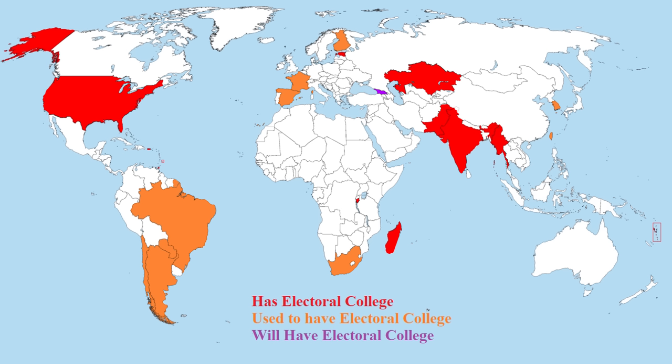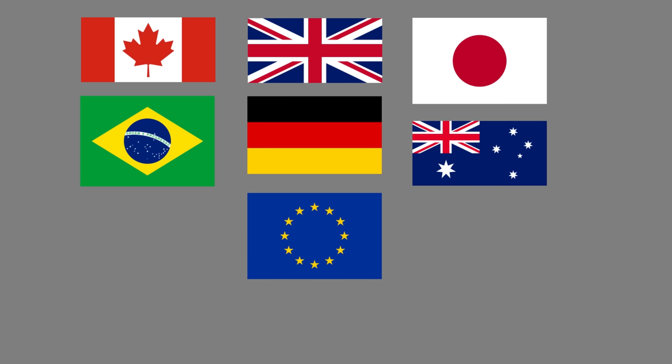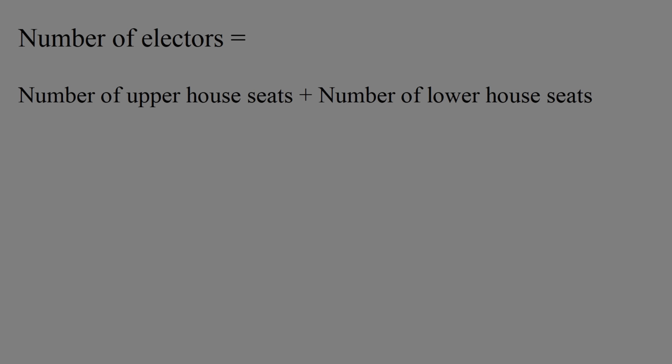Now, some countries in the past have used Electoral College systems, several today still use them, and Georgia is expected to adopt one in 2024. But for this video, we're going to imagine countries that currently do not have an Electoral College and pretend that they're going to adopt one. If they don't have a President, just pretend that they made a new office of President. To decide how many electors each state, province, or region will have,